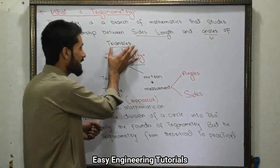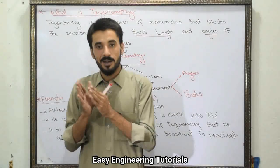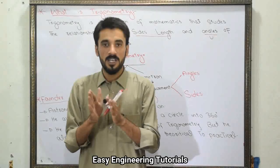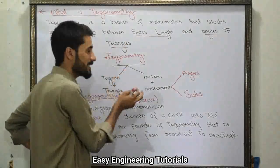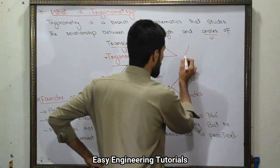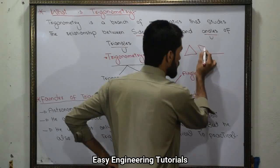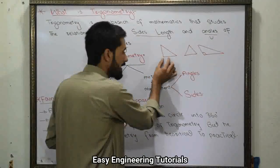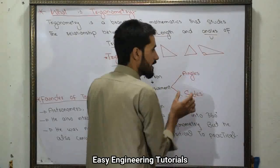Yahan jo triangles hain wo sirf right angle triangle nahi honge, balki aap ke paas right angle triangle bhi ho sakta hai, is ke alawa acute angle triangle bhi ho sakta hai, aur obtuse angle triangle bhi ho sakta hai — yaani right angle triangle, acute angle triangle, and obtuse angle triangle.